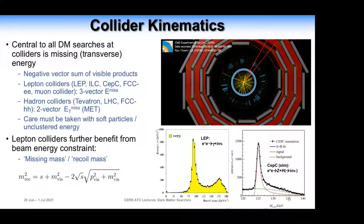When measuring these things, particularly at the hadron collider, you have to be careful with soft particles created in collisions — unclustered energy not associated with any particular high-energy particle like an electron, muon, or jet. This can cause difficulties when trying to measure low values of missing transverse momentum. At the lepton collider there's a further benefit from having such a well-defined initial state.